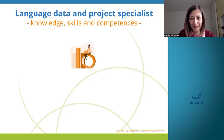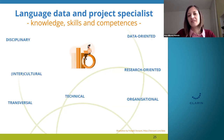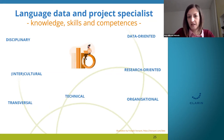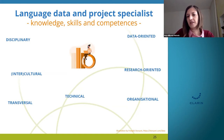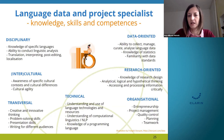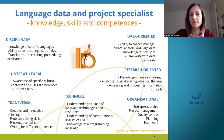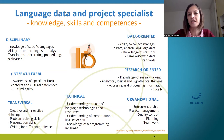We identified seven clusters of knowledge, skills, and competencies: disciplinary, intercultural, transversal, technical, data-oriented, research-oriented, and organizational. I've listed some examples here — these are not complete lists, but you can see some examples of the kinds of things that fall under these general areas.